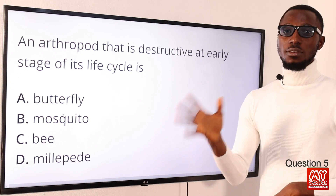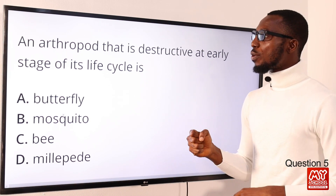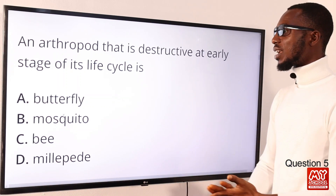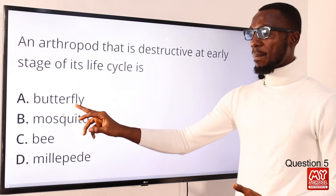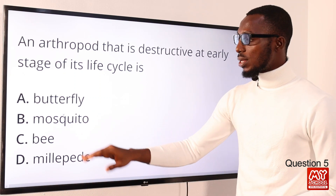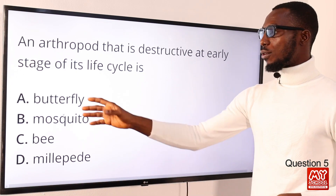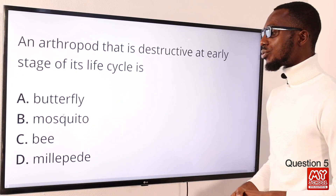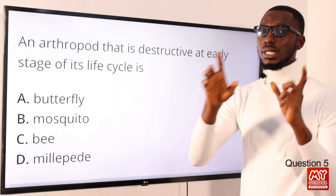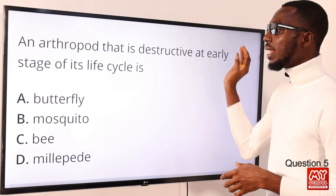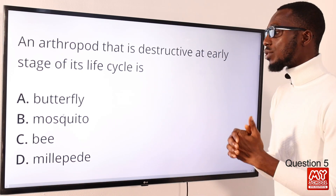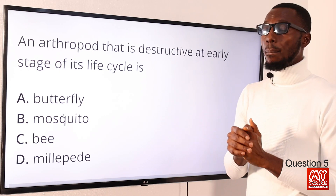Question 5: an arthropod that is destructive at the early stage of its life cycle is the caterpillar — for butterflies. We know that butterflies, mosquitoes, and bees are fluid feeders; you can find their proboscis. The correct option is option A for butterfly — not the adult stage, but the early stage of its life cycle in the form of a caterpillar.